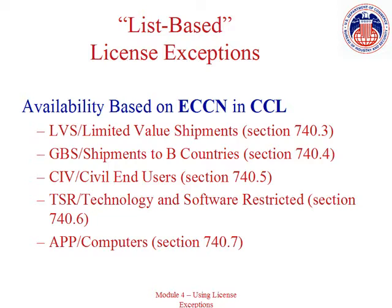The five list-based license exceptions are each very different in terms of criteria for use. Some are based on values, some based on the type of item, and some are based on destination or end use. For example, LVS authorizes the export and re-export of eligible items based on a value limit that varies based on the ECCN entry. The terms and conditions of LVS described in Section 740 Part 3 of the EAR indicate that the license exception is only to be used for single shipments and only for exports or re-exports to Country Group B countries. LVS has other limits as well, for example on the types of orders and numbers of transactions per year that are allowed.